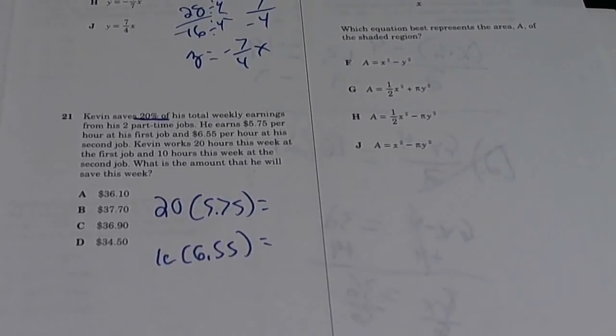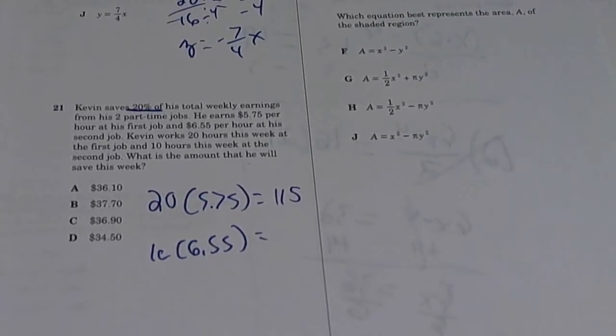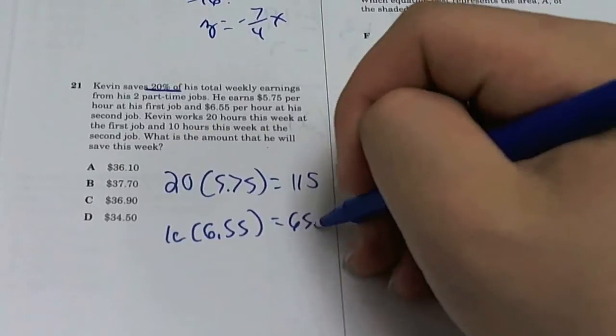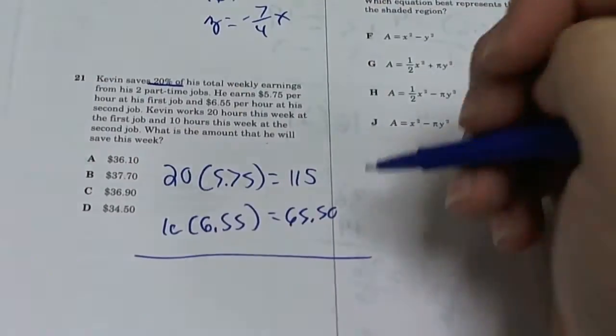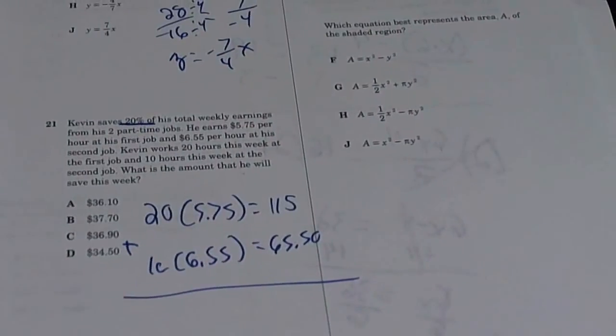The first job he works 20 hours and he gets $5.75 per hour. So of course you can do 20 times 5.75. That gives you a certain number, and then 10 times 6.55, which gives you $65.50.